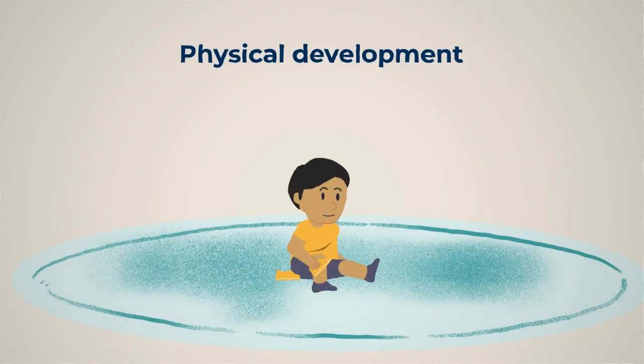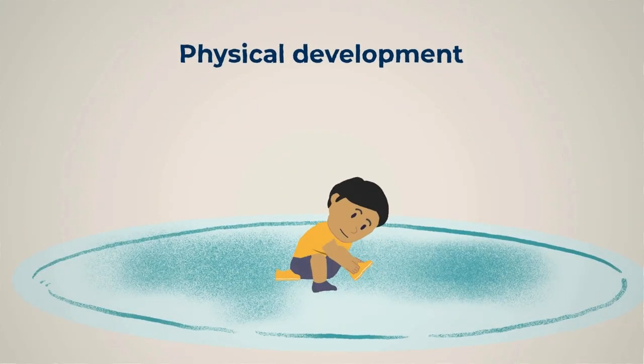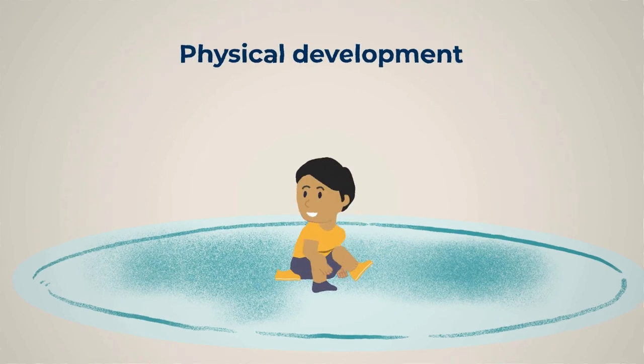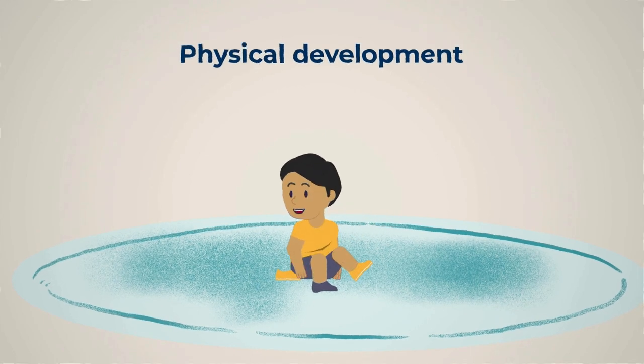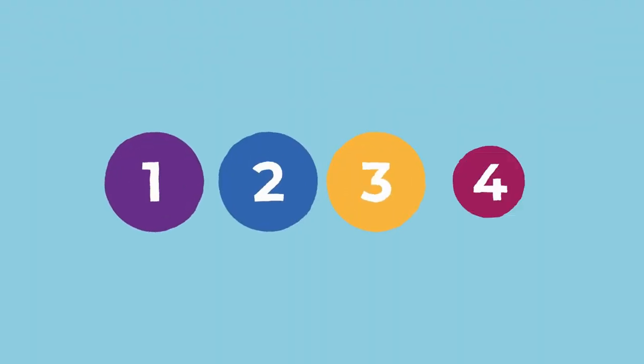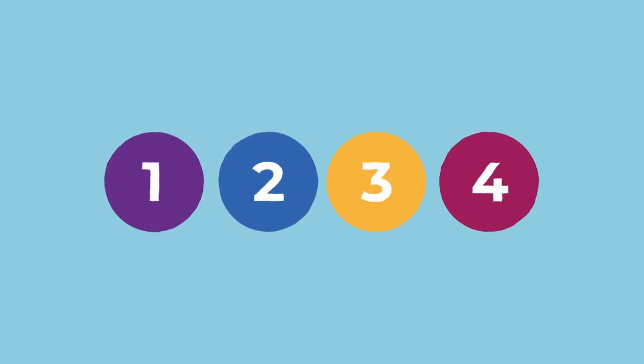Physical development happens as children learn to use and take care of their growing bodies. The physical development learning trajectory contains four subdomains.